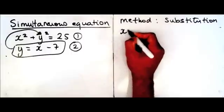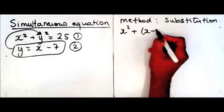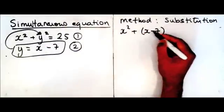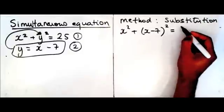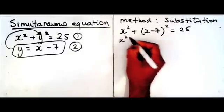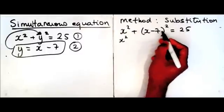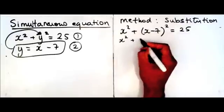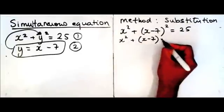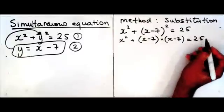I'm going to write x minus 7 squared plus x minus 7 squared — since the y is squared, I write x minus 7 squared is equal to 25. Here I've got x minus 7 squared, which means I'm going to multiply x minus 7 by itself: x minus 7 times x minus 7 equals 25.